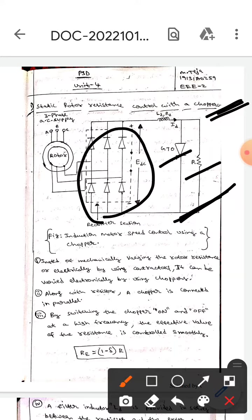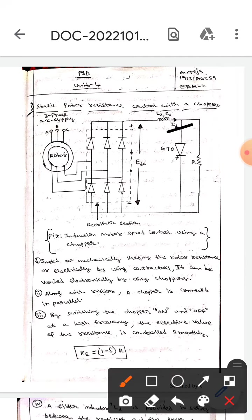This is the GTO, this is the external resistance R, this is the LD and RD, this is the rotor, this is the three-phase AC supply. Here, instead of mechanically varying the rotor resistance or electrically by using contactors, it can be varied electronically by using choppers.